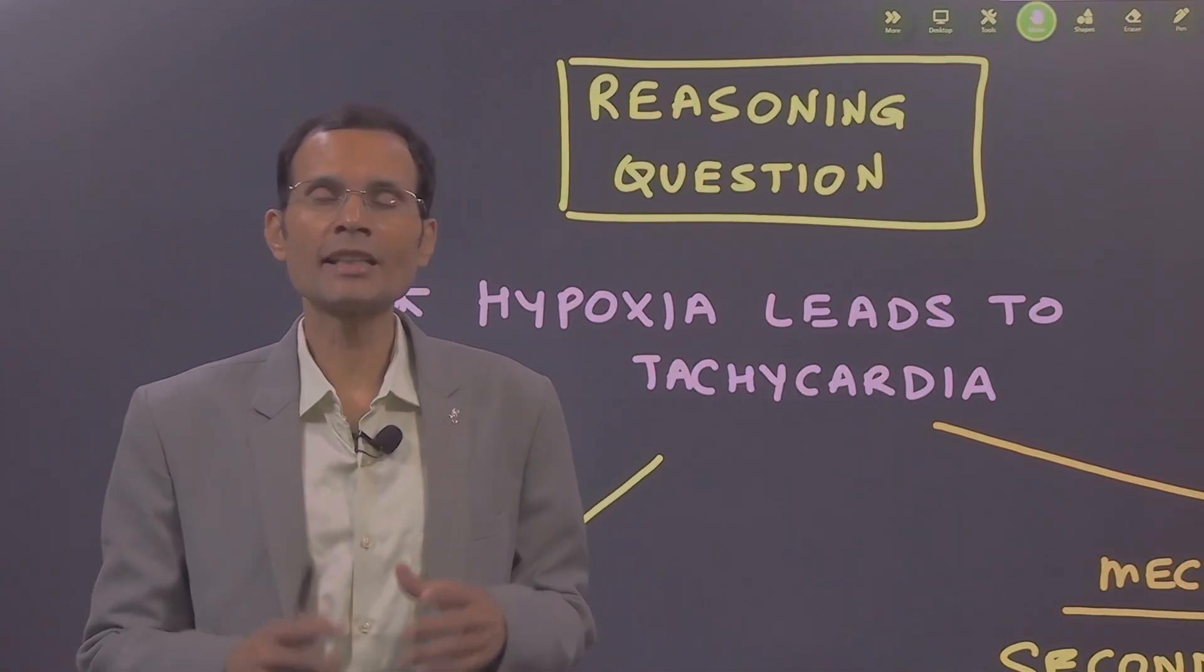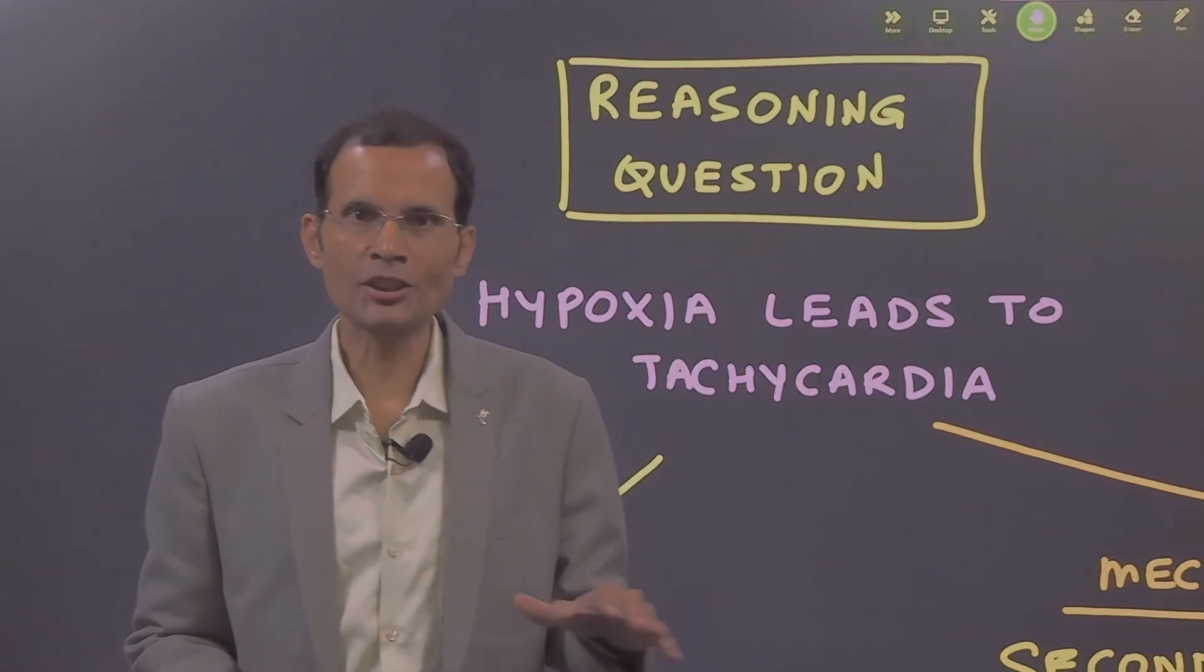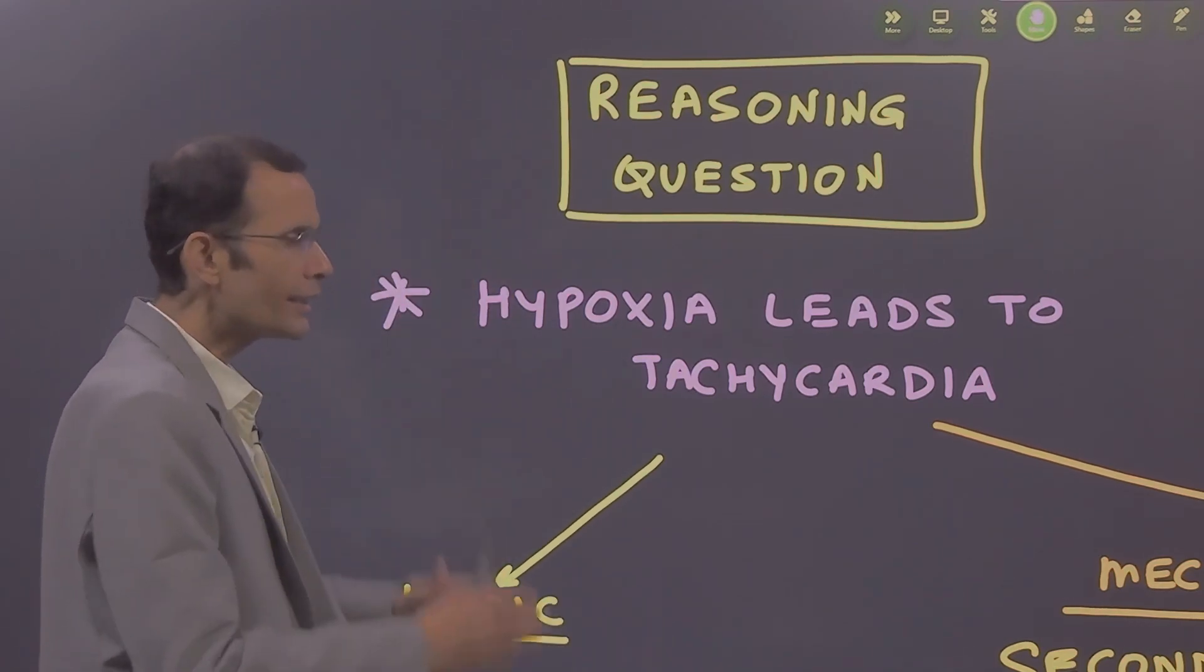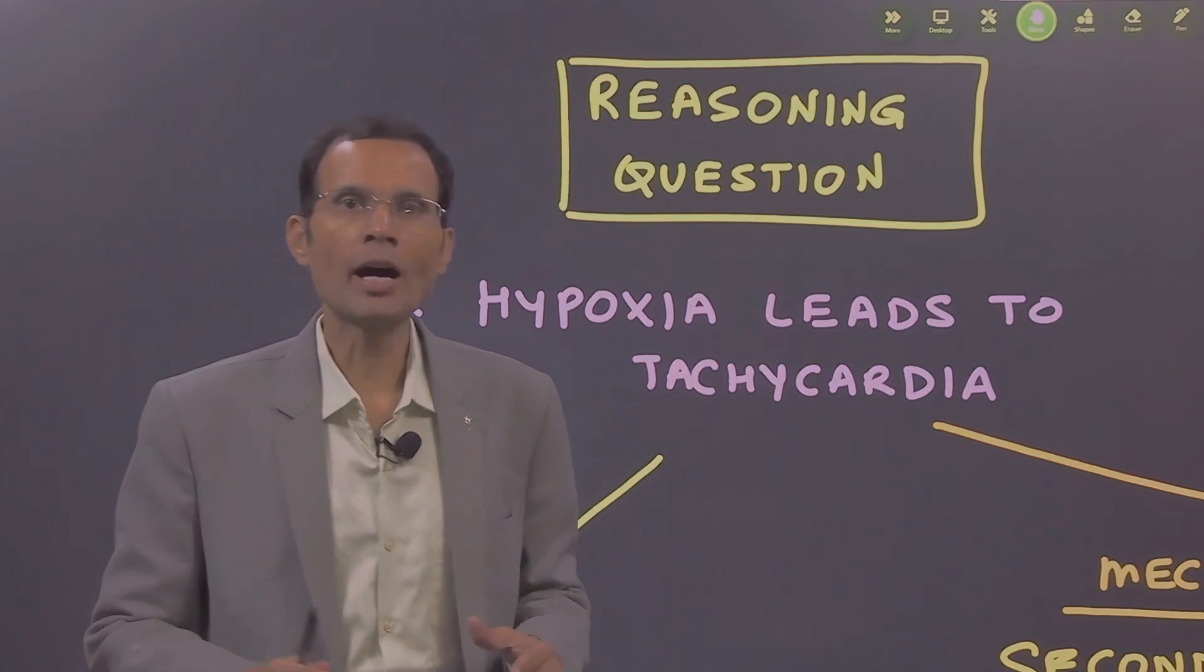Hello friends, today we have a reasoning type question. Let's see what the question is and what the explanation is. Hypoxia leads to reflex tachycardia. Explain why.